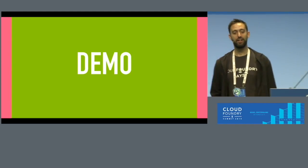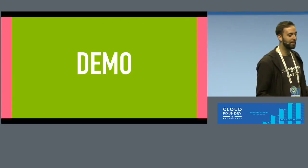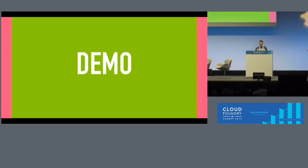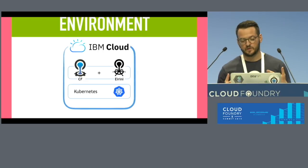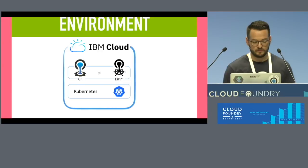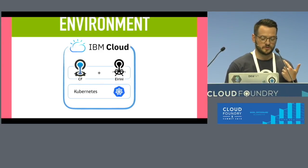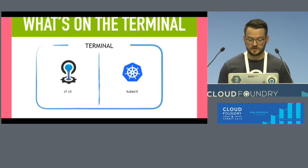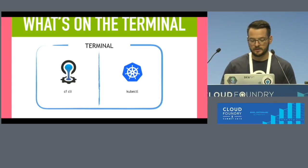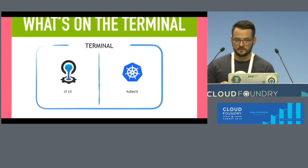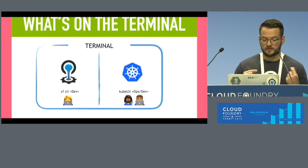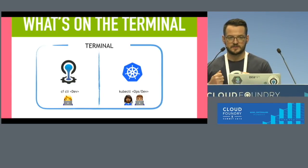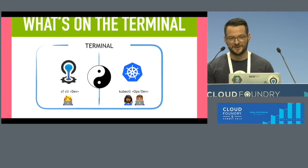Let's have a demo — a demo of the end of suffering. On IBM Cloud, I provisioned a Kubernetes cluster using the IBM Kubernetes Service. On top of that, I deployed a containerized CF including Irini. You'll see a split terminal: the left pane is Cloud Foundry — all the CF CLI commands — and the right side is Kubernetes with kubectl commands. The left side is the developer role and the right side is the operator role.